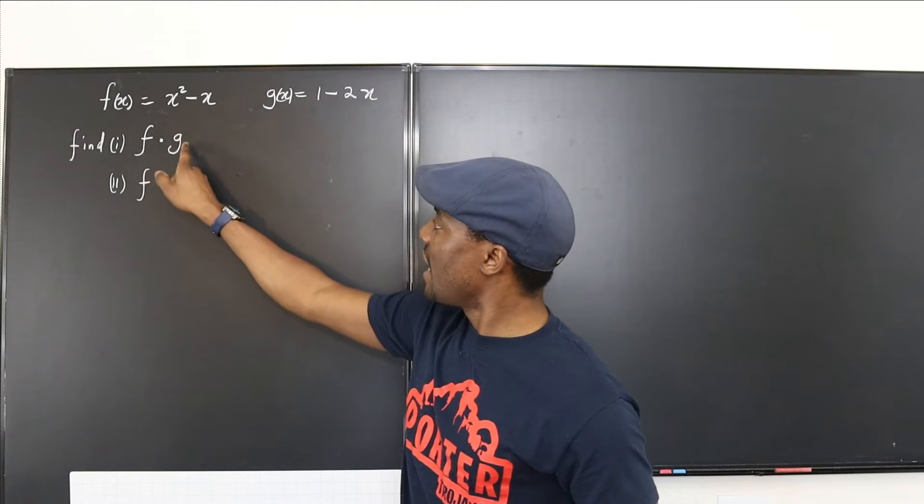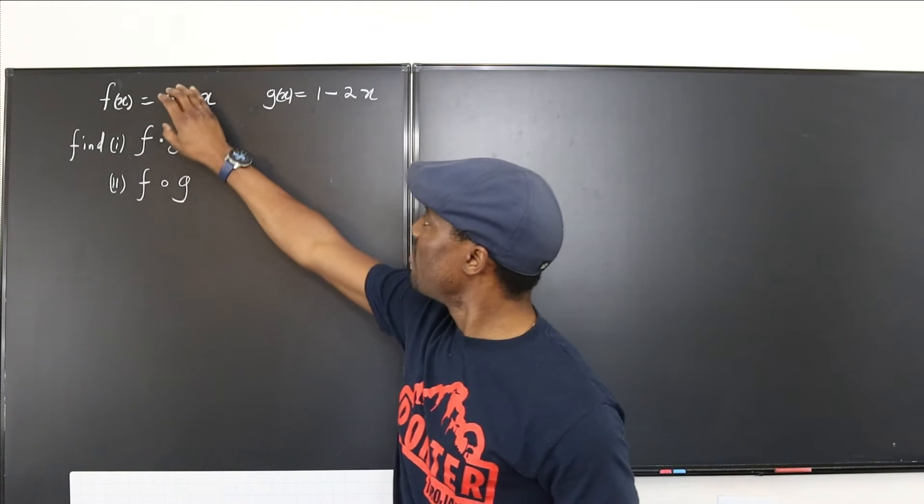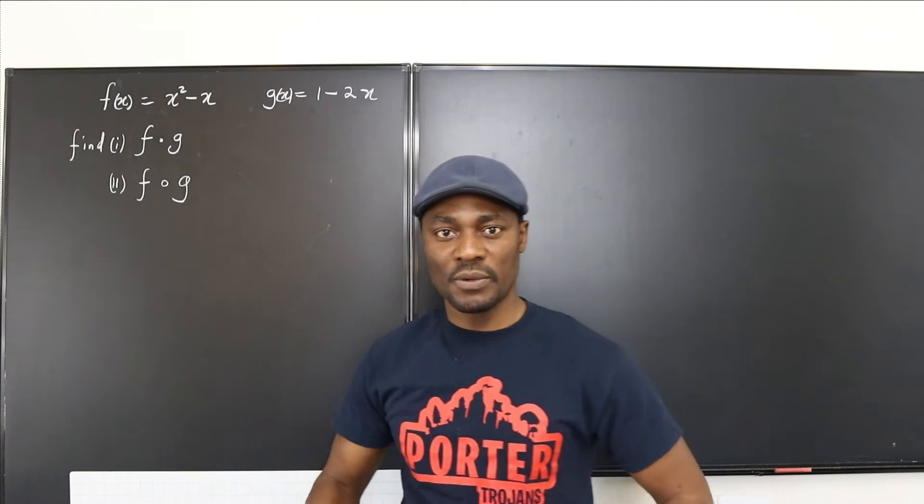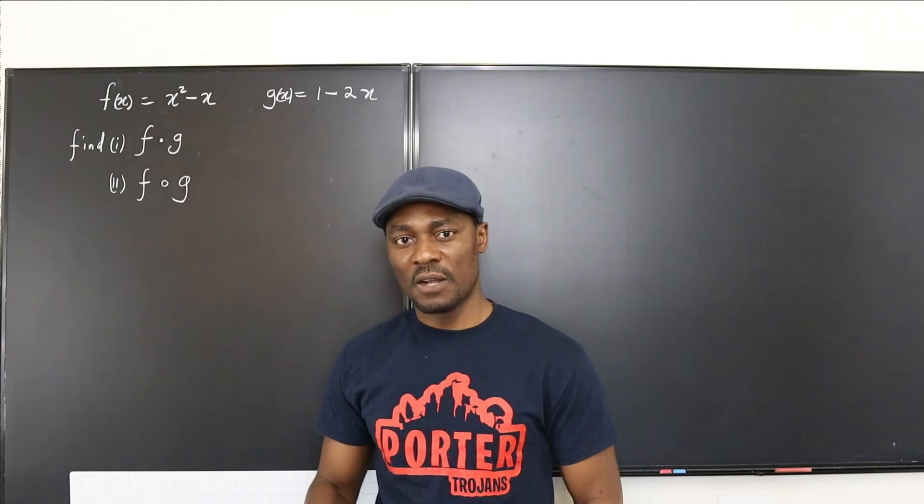In this case, you're multiplying two functions. So you're going to be multiplying x squared minus x by 1 minus 2x. So that's just the product of two polynomials. That should not be a problem.